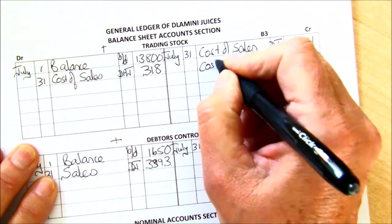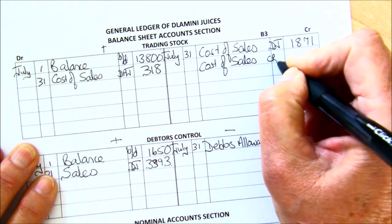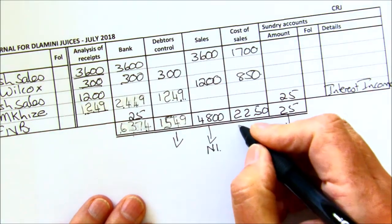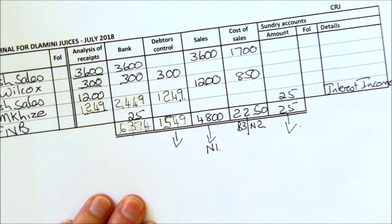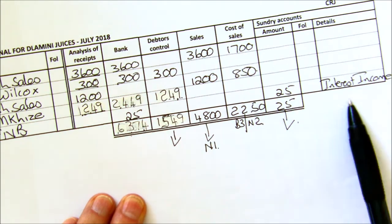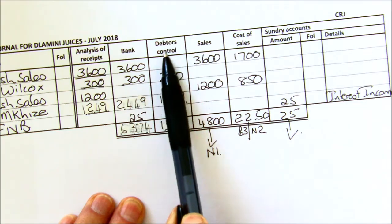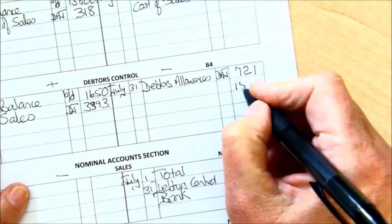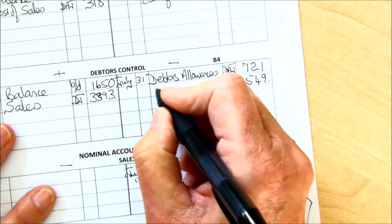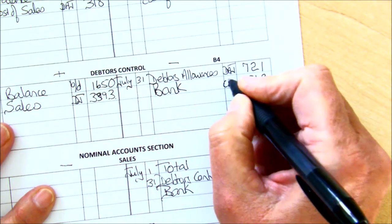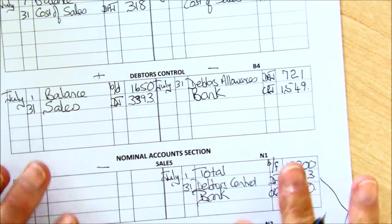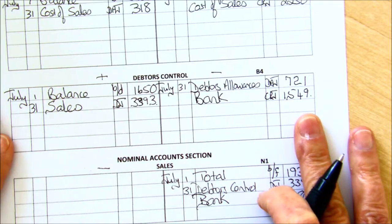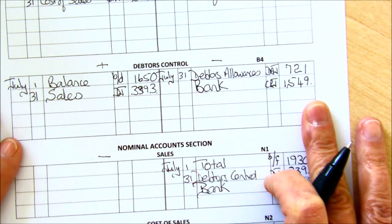There would be an interest income, which we're not doing that account. Now this is the new part — this is when our debtors came and paid us. They paid us 1549, and so your debtors' control is going down. They're paying off their accounts; they owe you less than what they did before. And the double entry is bank, for the cash receipts journal. Although the debtors' control is a new account, you would debit your bank because you're receiving money and you're minusing out of the debtors' accounts. If we balance this debtors' account now, we'll be able to see exactly what our debtors owe us.